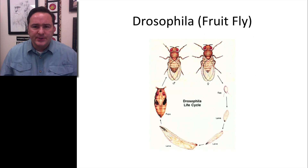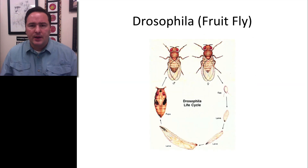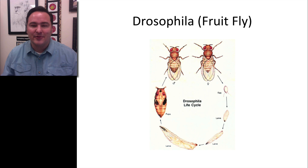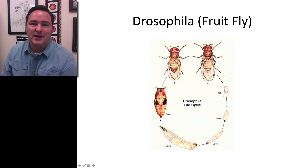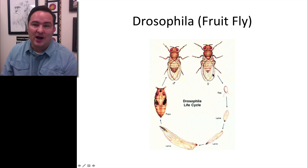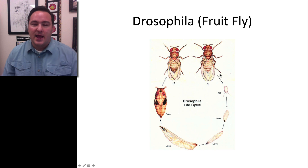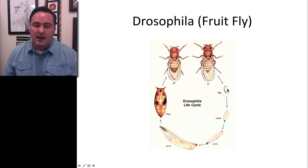We need a little bit of information about genetics in order to understand those questions better. To do this, we are going to be using fruit flies quite a bit. So here is a quick intro to fruit flies — they are from the genus Drosophila and they are insects.